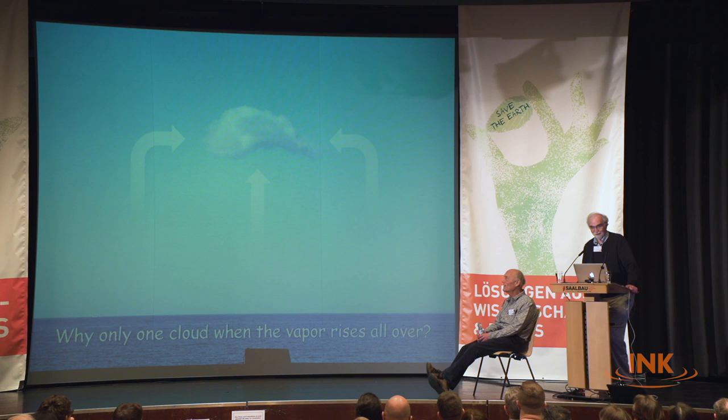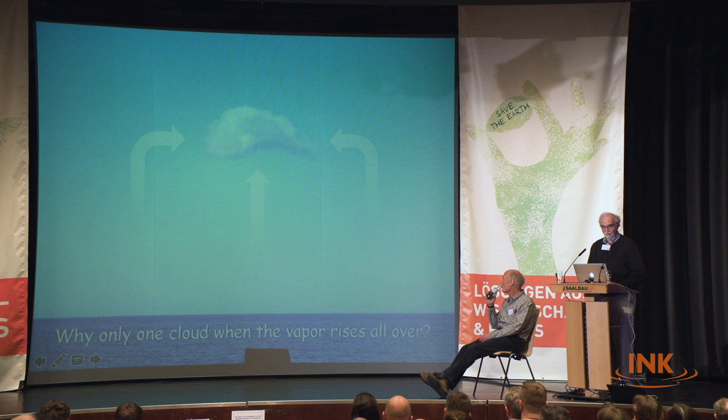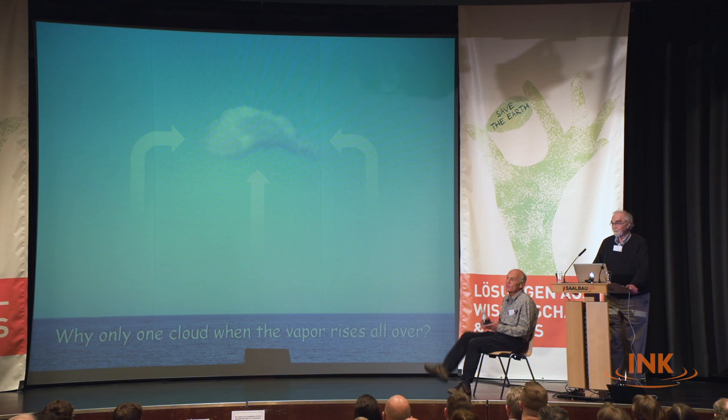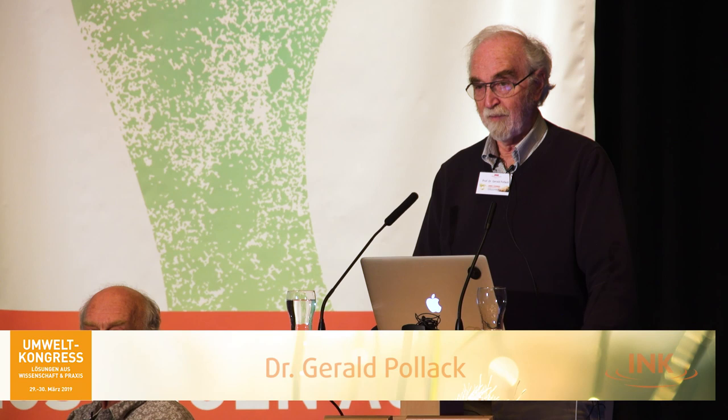Another question: water is evaporating from all over, so how is it possible to see only one cloud here? Why isn't there always one continuous cloud across the sky? Do you know the answer?